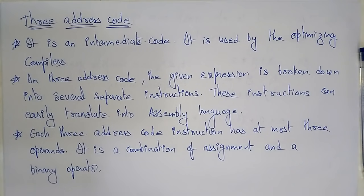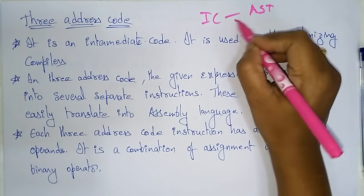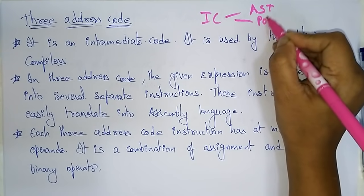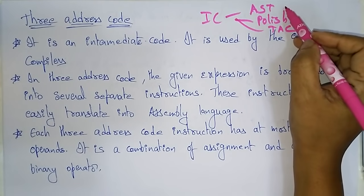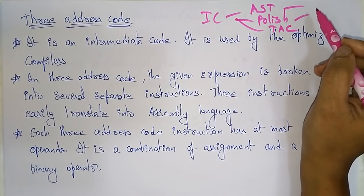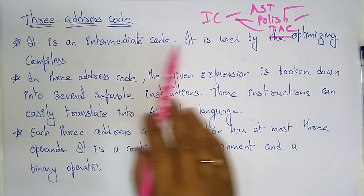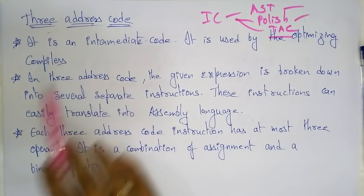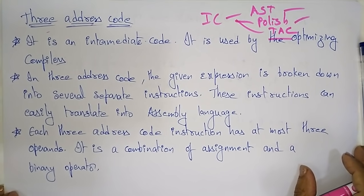Hi students. Coming to the next concept in the intermediate code, that is three address code. The intermediate code can be represented as an abstract syntax tree, Polish notation, and three address code. We already saw what abstract syntax tree and Polish notation are. Now let's see the three address code. It is an intermediate code used by the optimizing compilers.